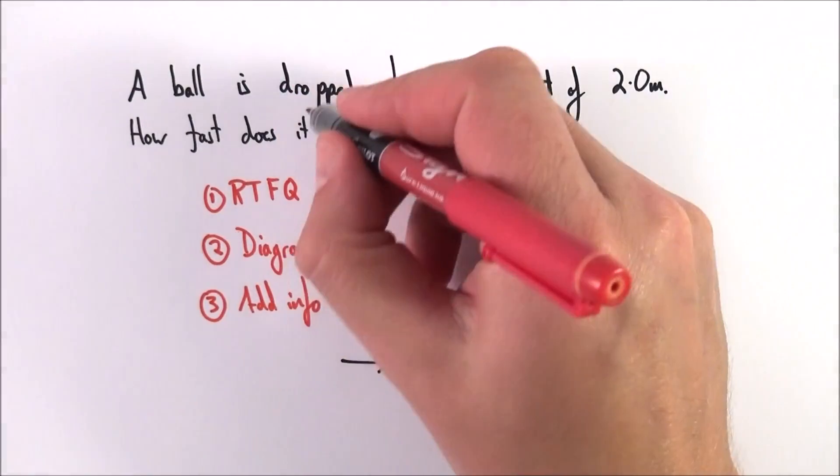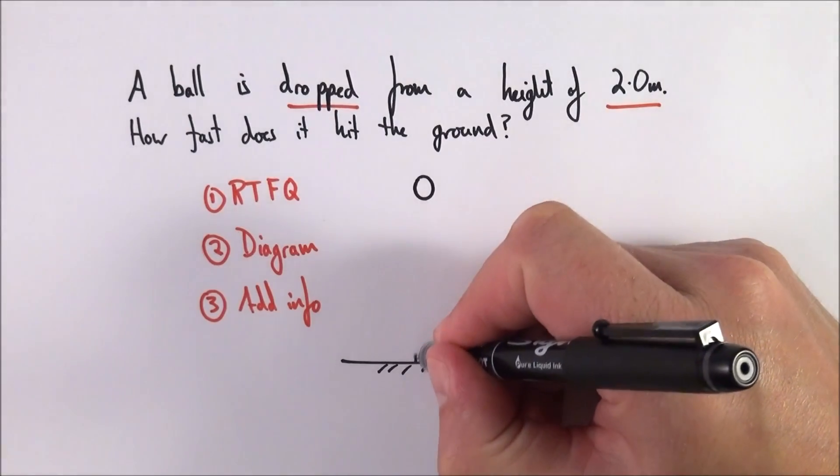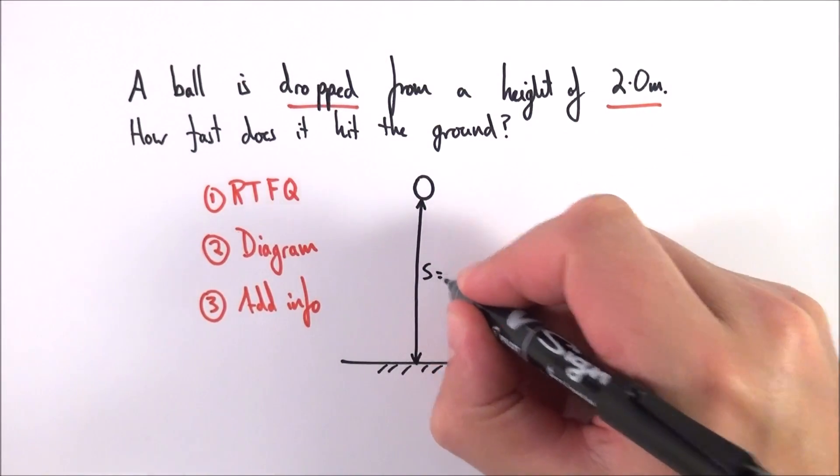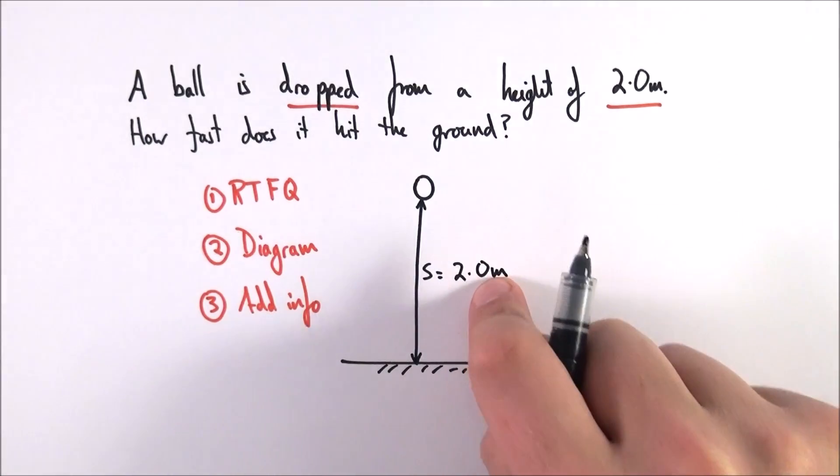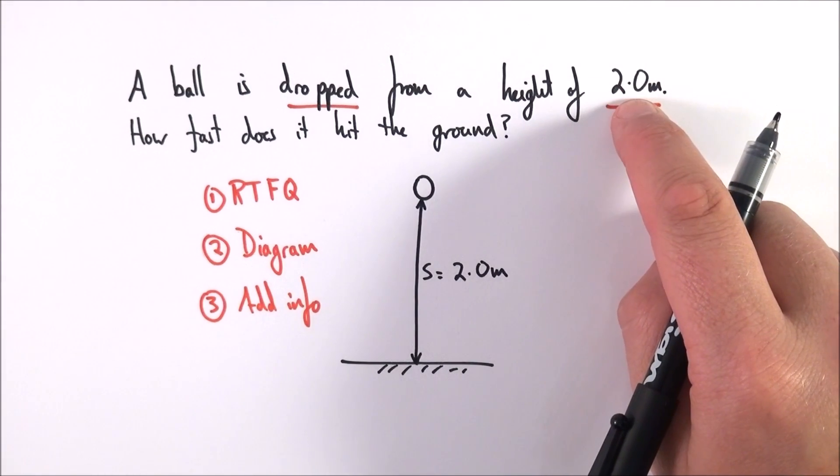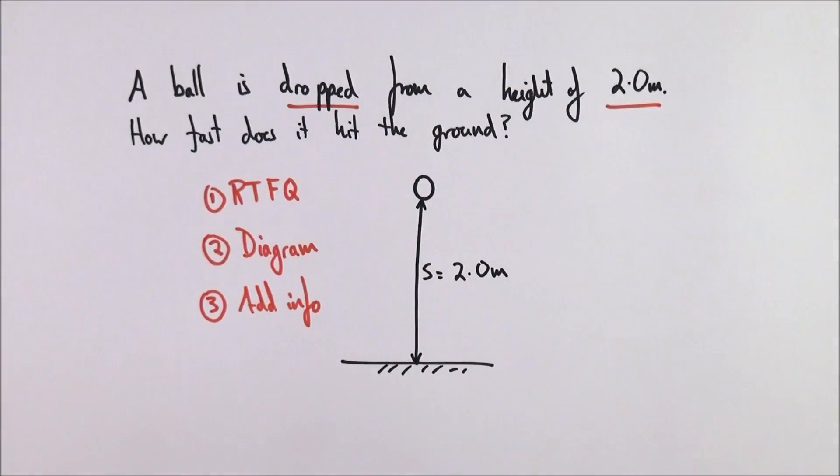First of all, the ball is dropped, so it's not thrown, from a height of two meters. That means the distance between the ground and the bottom of the ball, my height which is s, is equal to 2.0 meters. I've written it in SI units to an appropriate number of significant figures as given in the question.